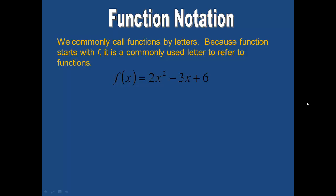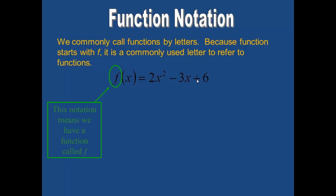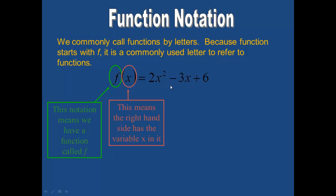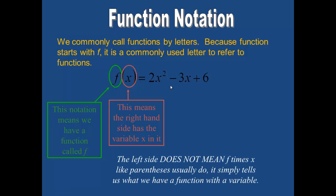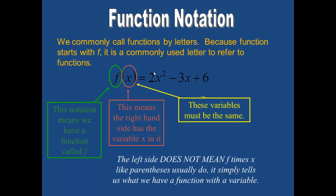In this example, we have f of x equals 2x squared minus 3x plus 6. Remember that equations have a left side and a right side. The notation f means that we have a function we are calling f. The x on the left means that the right-hand side will use the variable x. It is very important to remember that f of x does not mean f times x like parentheses usually do. It simply tells us that we have a function with a variable, and all the variables must be the same on both sides of the equation.